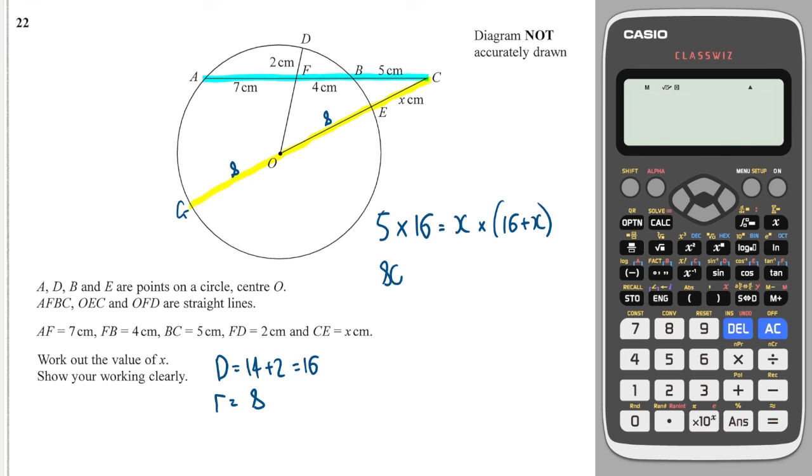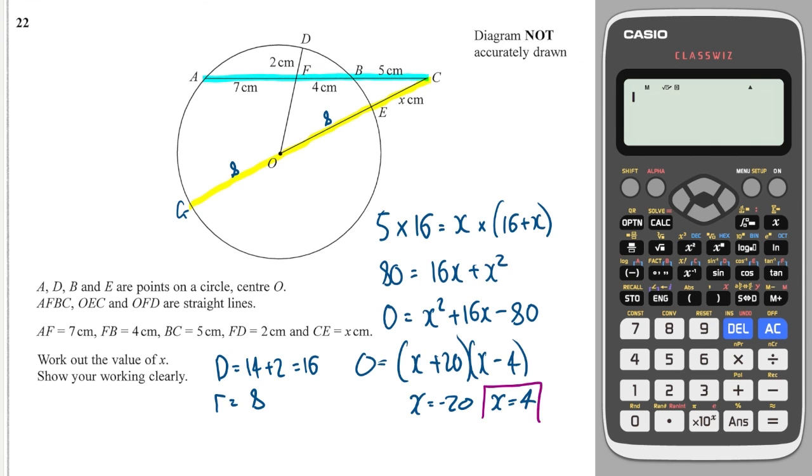So 5 times 16 is 80, and then multiplying out this bracket is going to give me 16X plus X squared. So setting equal to 0 is going to give me X squared plus 16X minus 80. And we can factorize this, two numbers are tied together to make minus 80, or plus 20, and negative 4, and they do add together to make 16, which is good. Which gives me that X is equal to minus 20, or X is equal to 4. And of course, X must equal 4, because it can't be negative, because it's a distance.